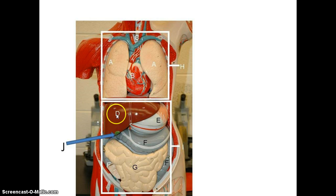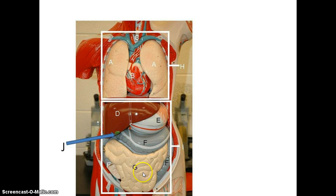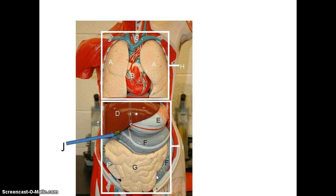Here we have the liver, and here is the gallbladder. This is the stomach. This structure here is the small intestine — all this tan. The large intestine is right here, and we'll learn more individual parts of it later on.